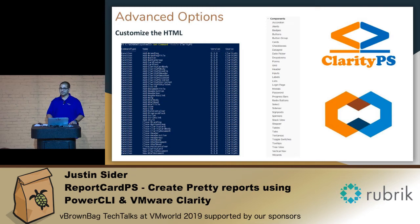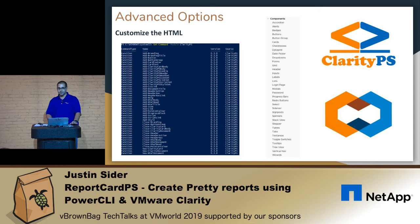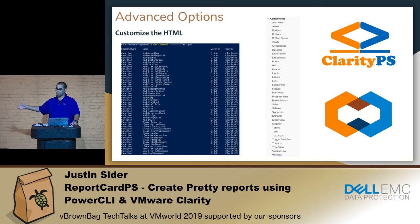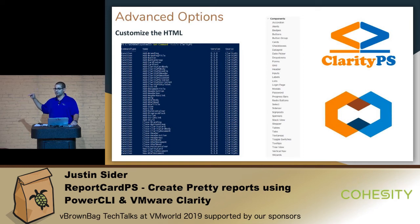So the advanced options: if you want to get into customizing the header and footer of your report, you want to take a look at ClarityPS to pull out all the elements from the VMware Project Clarity HTML CSS project. Here's an example of all the components they have available. If you go to their website, you can get all the different elements and how to use them so that you can add little widgets or whatever things you want to your webpages.